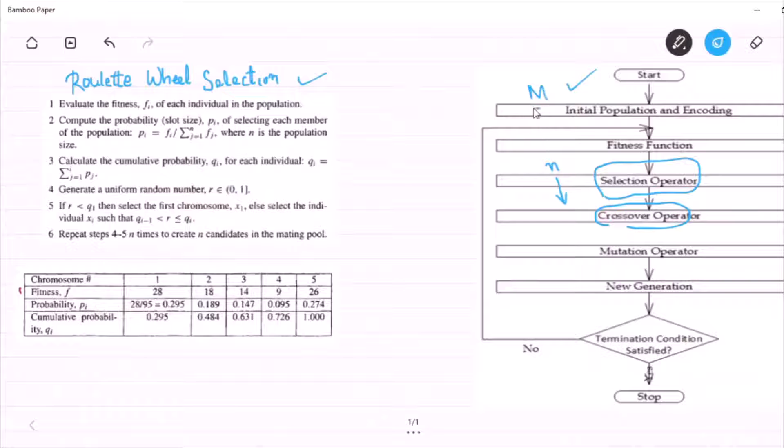In other words, we can say that out of my initial population of capital M size, we have to choose n. So whatever the mechanism that chooses any number of individuals is known as Selection Method. So one such Selection Method is Roulette Wheel Selection.